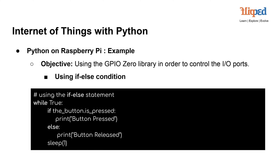This delay ensures that the button status is checked at regular intervals. The code continuously monitors the status of the button and prints the appropriate message depending on whether the button is pressed or released. This example showcases a simple button interaction using Python and the GPIOzero library on the Raspberry Pi, laying the foundation for more complex IoT projects that involve sensor inputs and controlling various actuators based on input events.